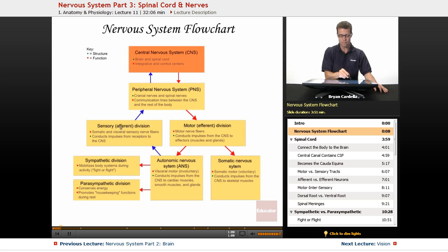The way that I keep the words afferent and efferent straight is I think of it alphabetically in terms of the brain being up top, kind of like the top of the alphabet. And so A has to do with going up to the brain. Afferent is all of these sensory signals.